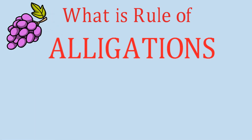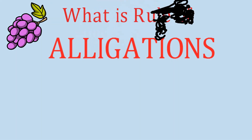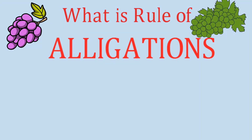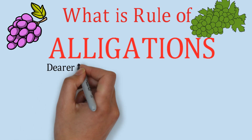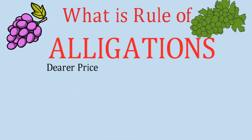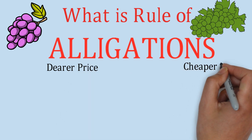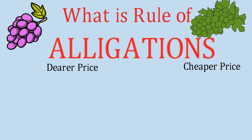What is the rule of alligation? Suppose you have two types of varieties for a particular thing — like two types of grapes. The first grape on the left side and the second grape on the right side. The grape on the left side is more expensive than the right side, so we call its price the dearer price, and the other the cheaper price.